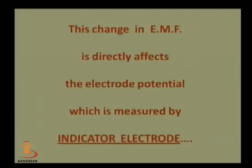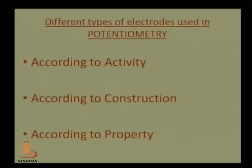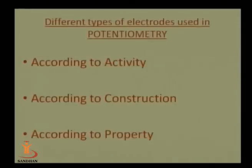The change in EMF directly affects the electrode potential, which is measured by the indicator electrode. In modern potentiometry, electrodes are classified according to their activity, construction, and property. According to activity, there are two types: active electrodes, which take part in the chemical reaction and transfer electrons, and inactive (inert) electrodes.